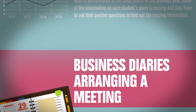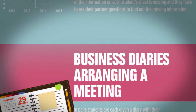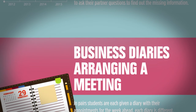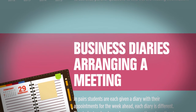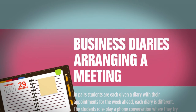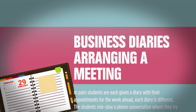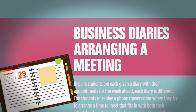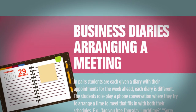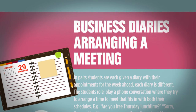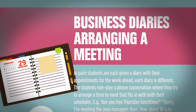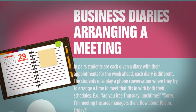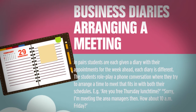Business Diaries: Arranging a Meeting. In pairs, students are each given a diary with their appointments for the week ahead. Each diary is different. The students role-play a phone conversation where they try to arrange a time to meet that fits in with both their schedules. For example: "Are you free Thursday lunchtime?" "Sorry, I'm meeting the area managers then." "How about 10 a.m. Friday?"